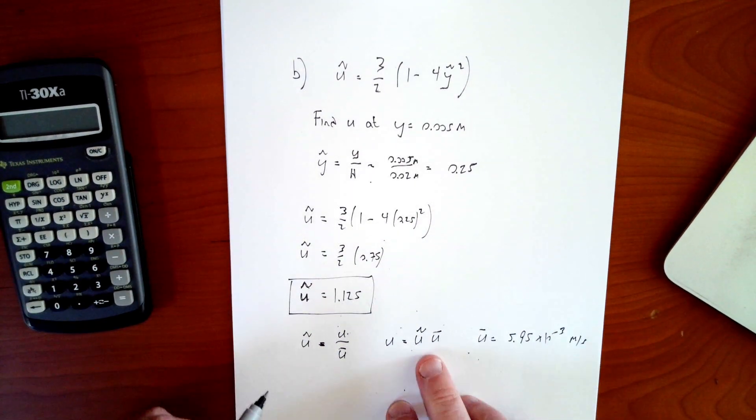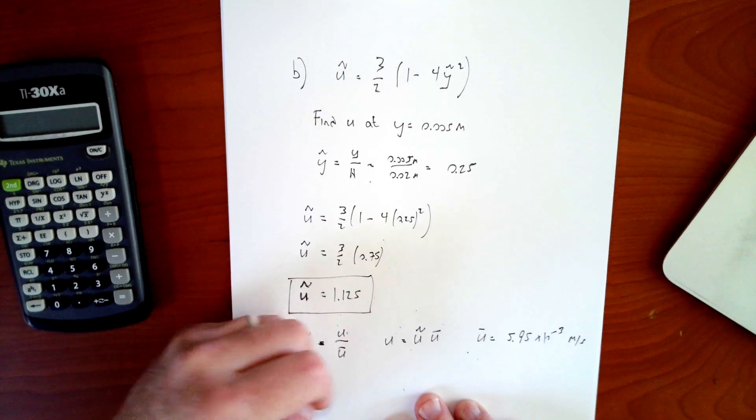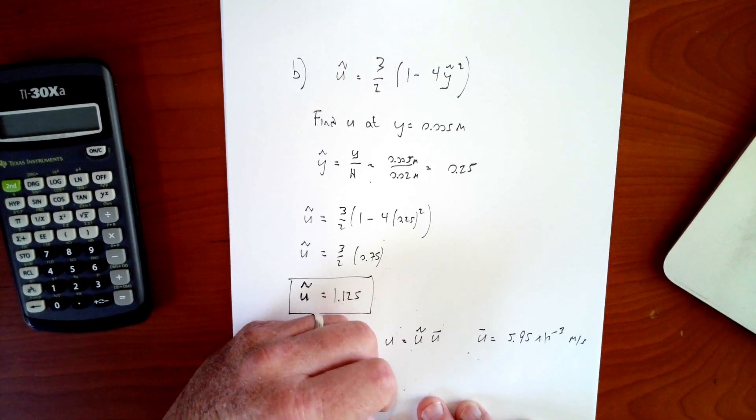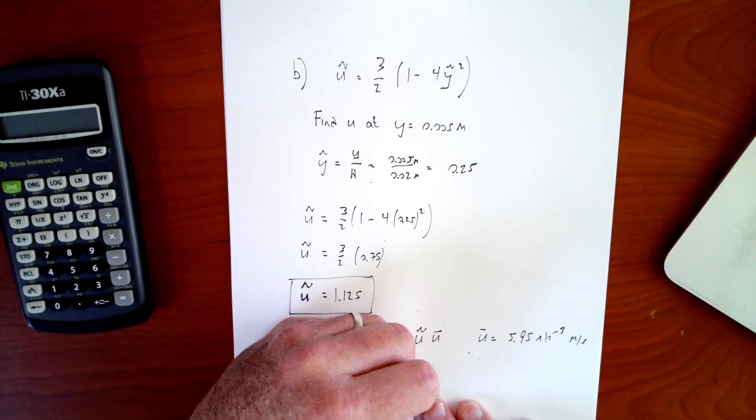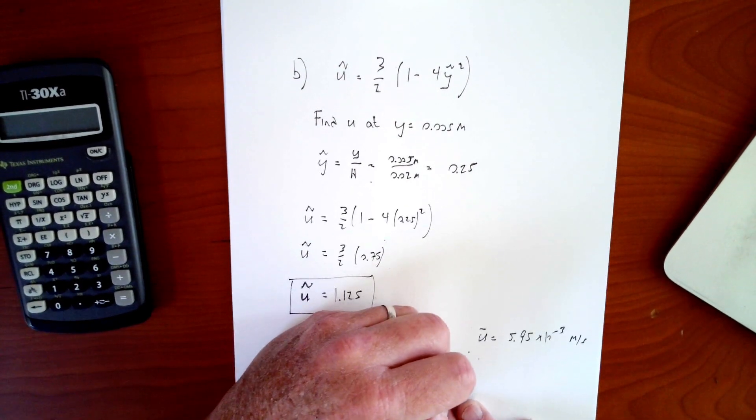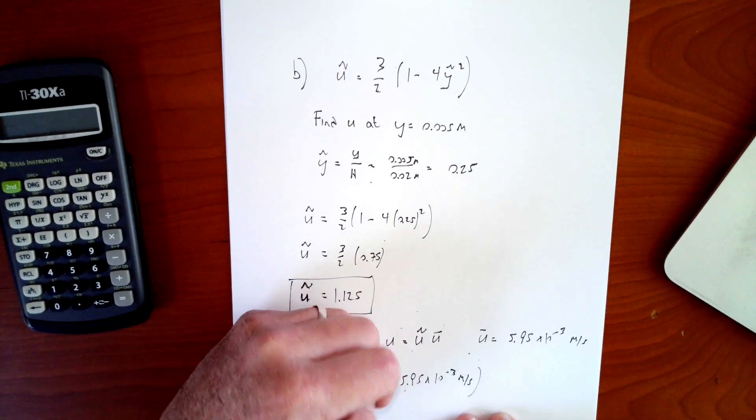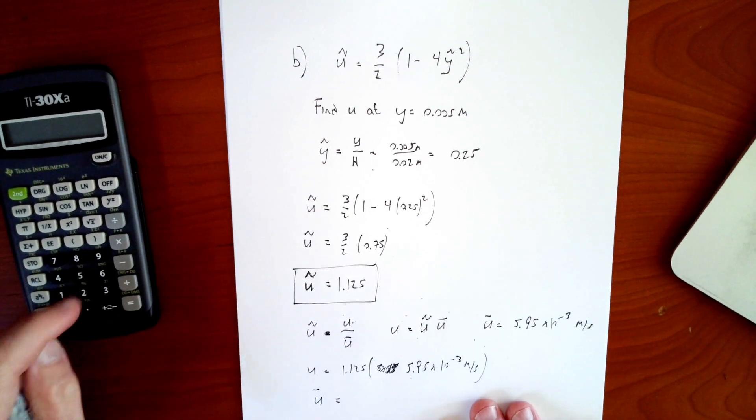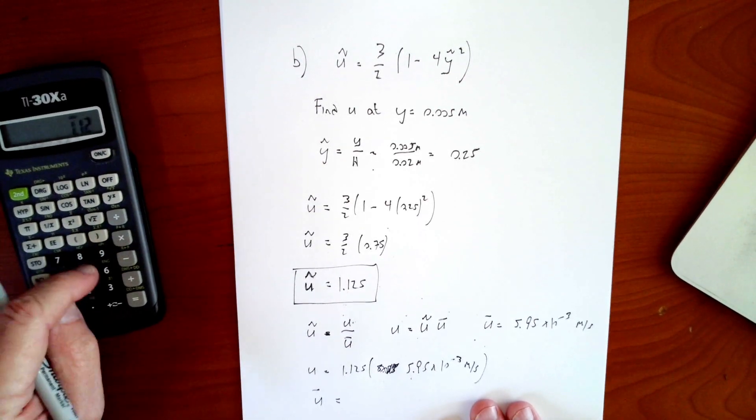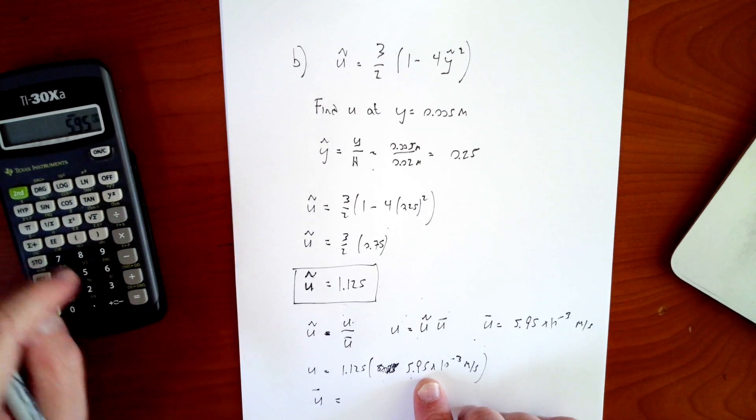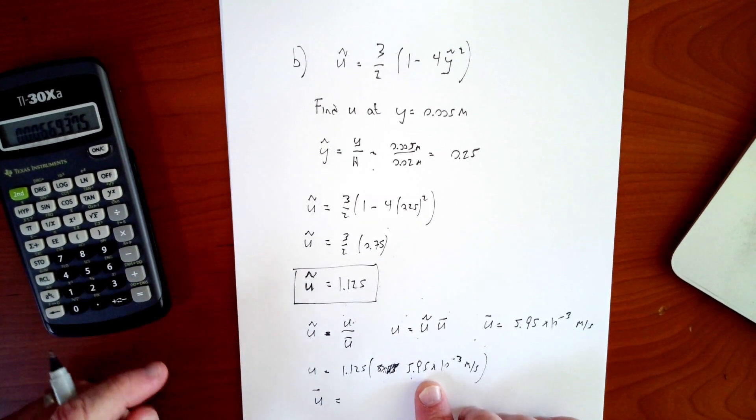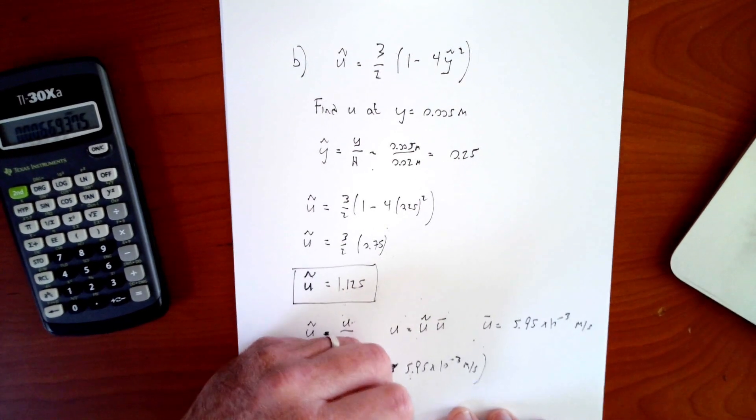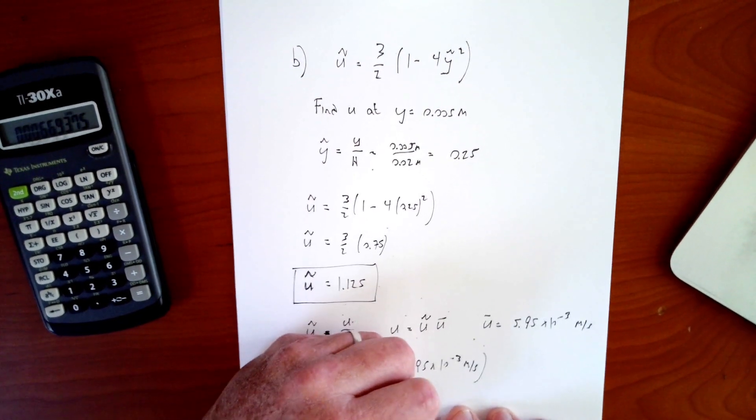It was u bar equals 5.95 times 10 to the minus 3 meters per second. So I just take that and I multiply it by 1.125. So u equals 1.125 with no dimensions times 5.95 times 10 to the minus 3, which is meters per second, which is going to give me a proper velocity.